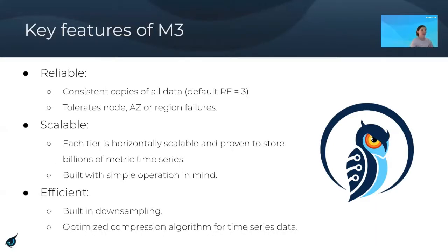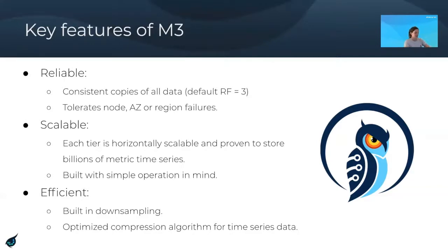Some of the key features of M3, as they tie back to the main pain points with Prometheus: from a reliability perspective, M3 keeps consistent copies of all its data with a default replication factor of three, and is designed to tolerate single node, availability zone, and region failures out of the box. It is also highly scalable — each tier is horizontally scalable and has been proven to store billions of metrics time series at a time. It was built with simple operation in mind to reduce management overhead at scale. And in terms of efficiency, it has built-in downsampling capability and all data is optimized with a special compression algorithm designed specifically for metrics and time series data.